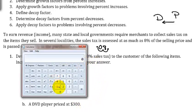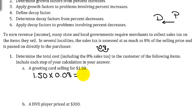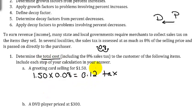In our calculators, we do the operation 1.5 times 0.08, and that gives us our tax of 12 cents. We want to determine the total cost, so we add the 12 cents tax, giving us a total cost of $1.62 for the greeting card.